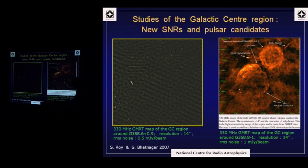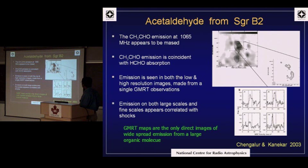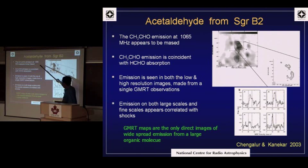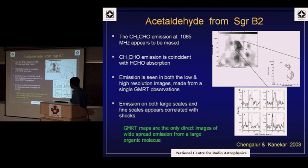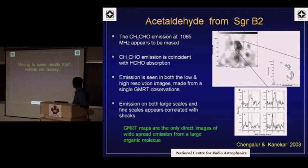For molecular lines, a study of Sagittarius B2 detected CH3CHO at 1065 megahertz - a frequency difficult to observe at many other observatories - producing maps showing details of these structures.